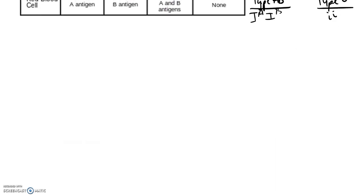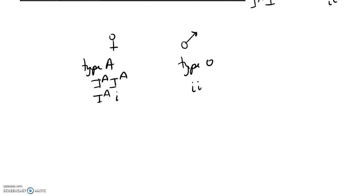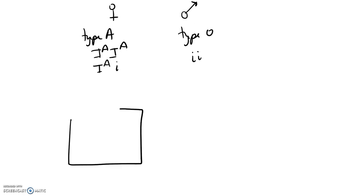Let's work a blood typing problem. Say a man and a woman have a child: the woman's blood type is type A and the man's blood type is type O. We want to know all the possible blood types their children can have. The man's genotype is easy — there's only one way to be type O: lowercase ii. But the woman's genotype is harder — she could either be I^A I^A or I^A i. We'll need to do two different Punnett squares to determine all the possibilities.